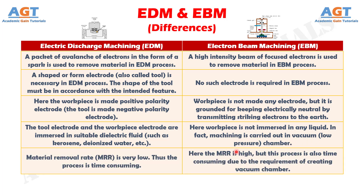Number 5: Material removal rate is very low, and thus the process is time consuming in Electric Discharge Machining, whereas in Electron Beam Machining the material removal rate is high, but this process is also time consuming due to the requirement of creating a vacuum chamber.